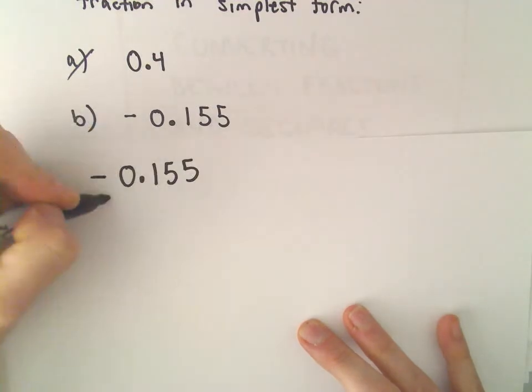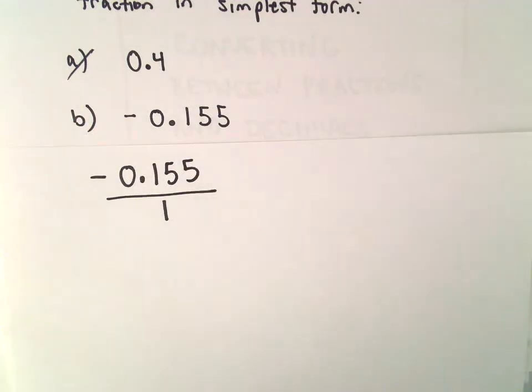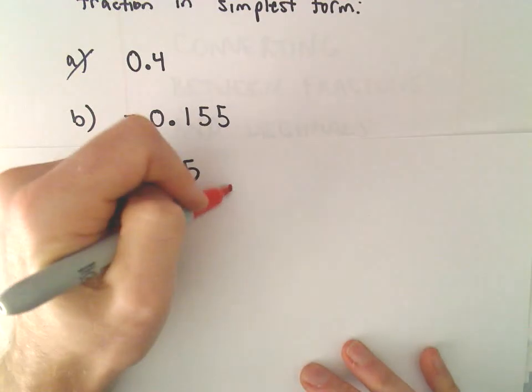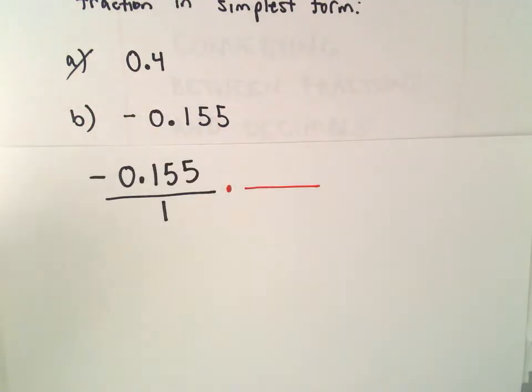So I'm just going to simply write that over 1. And then again, I'm going to multiply by either 10 over 10, 100 over 100, 1000 over 1000, etc.